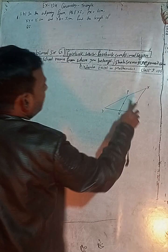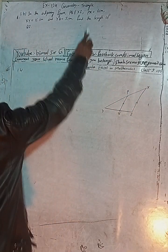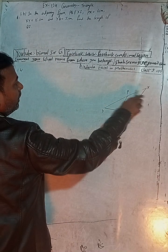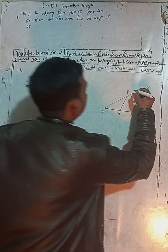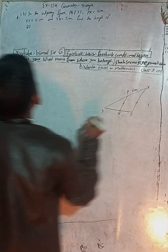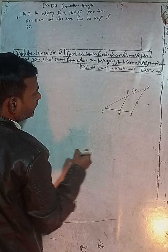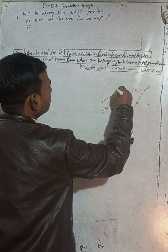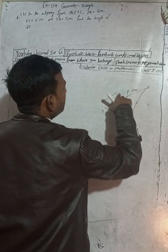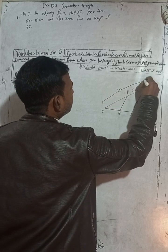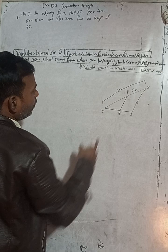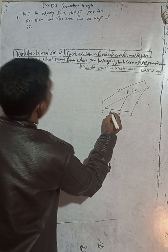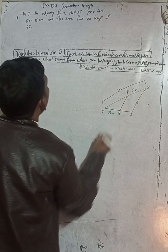This is question number 1B. In the adjacent figure, PQ is parallel to XZ. PX is equal to 6 cm, XY is 15 cm total, and YQ is given as 3 cm. We have to find the length of QZ.